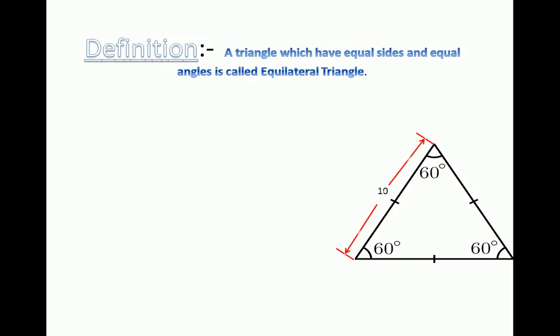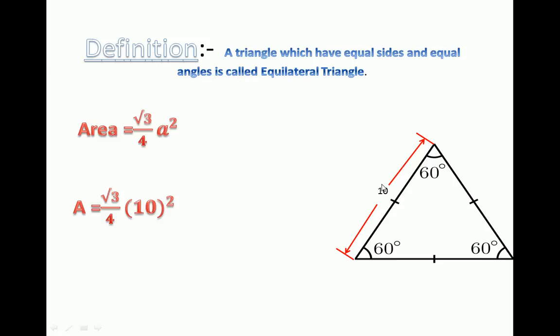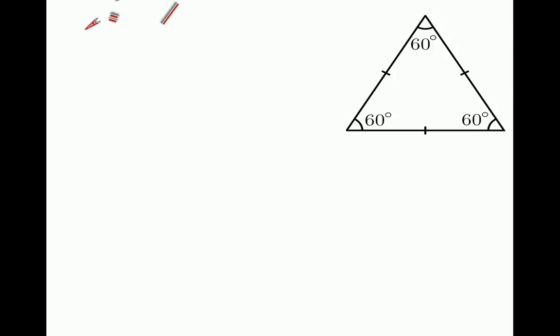The side of this triangle is 10. For finding the area of this triangle we use the formula: area = (√3 / 4) × a². When we put the value of one side into this equation, we find the area of this triangle, which is 43.2012 square units.